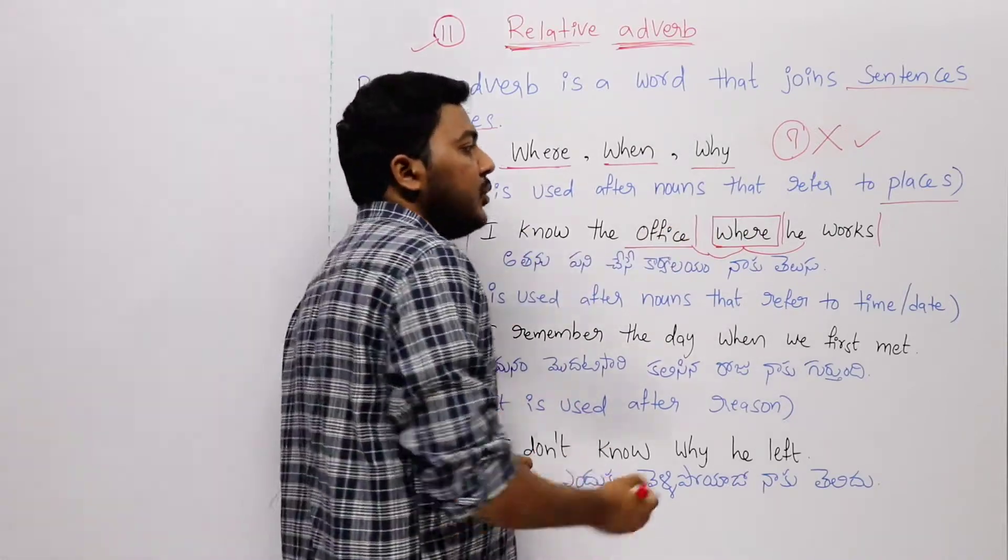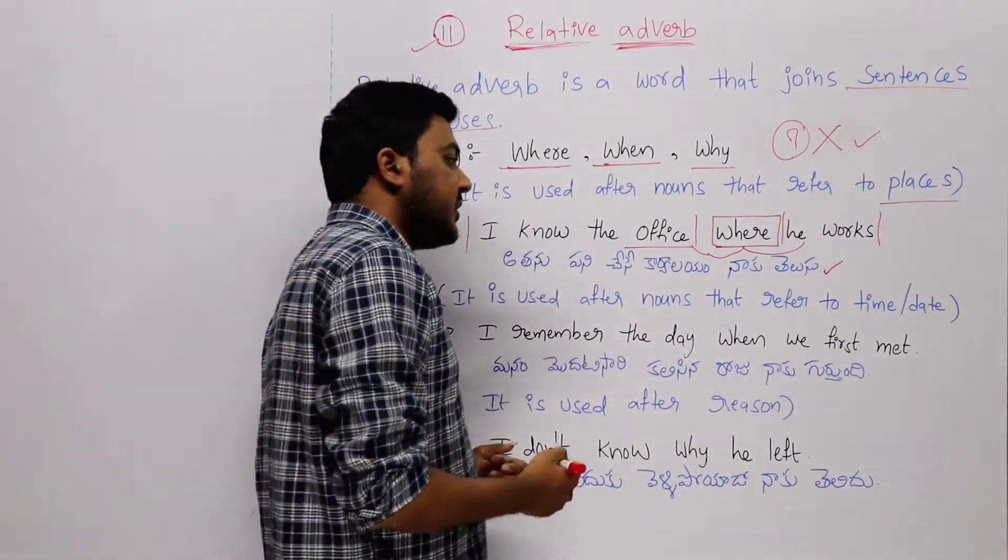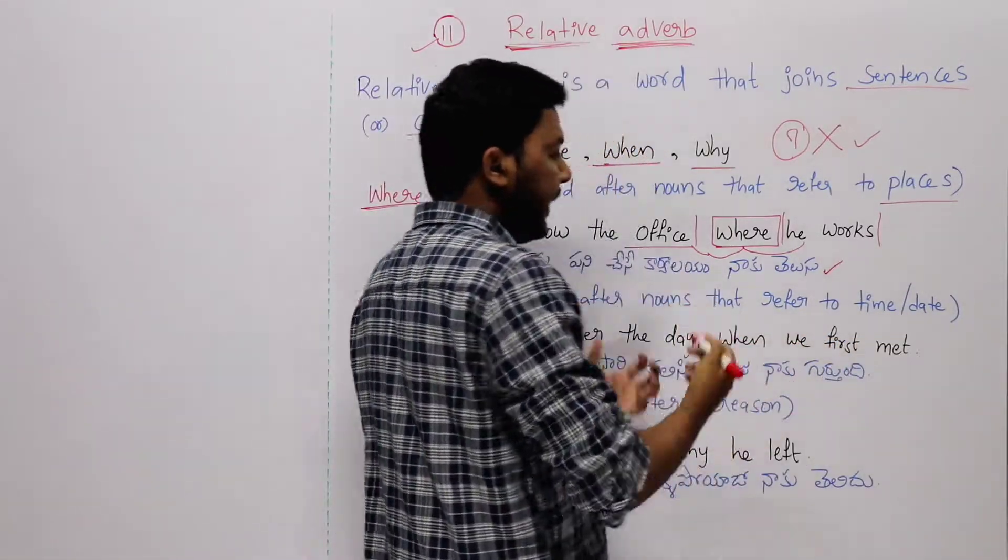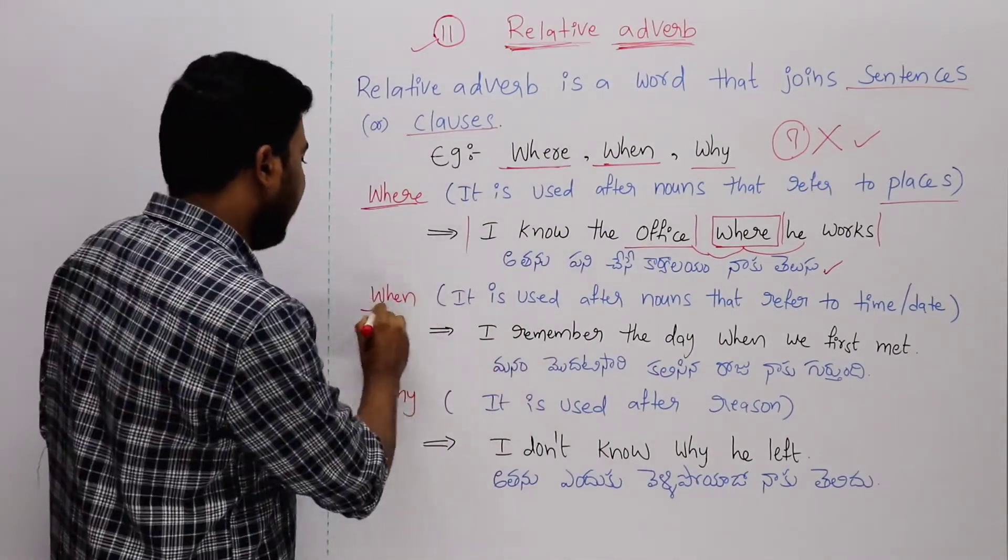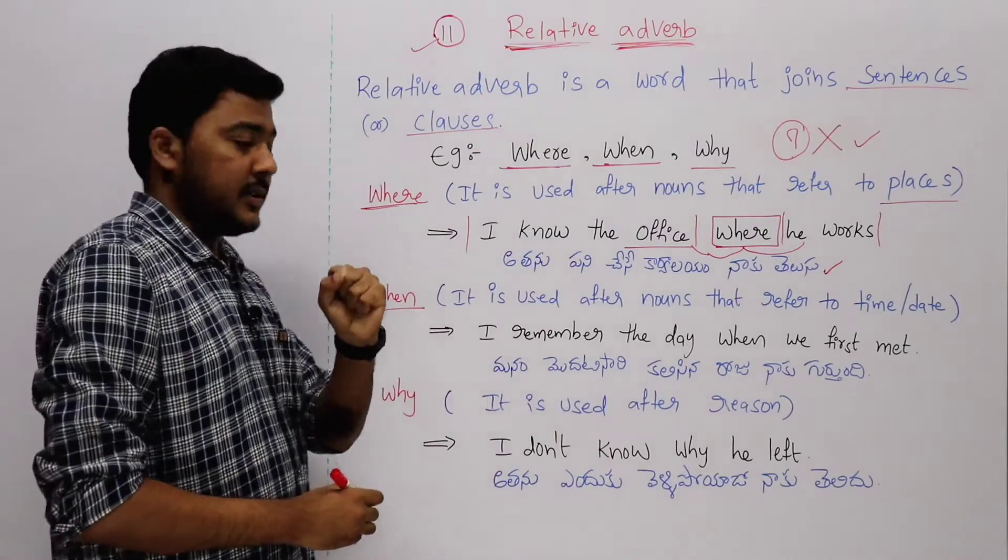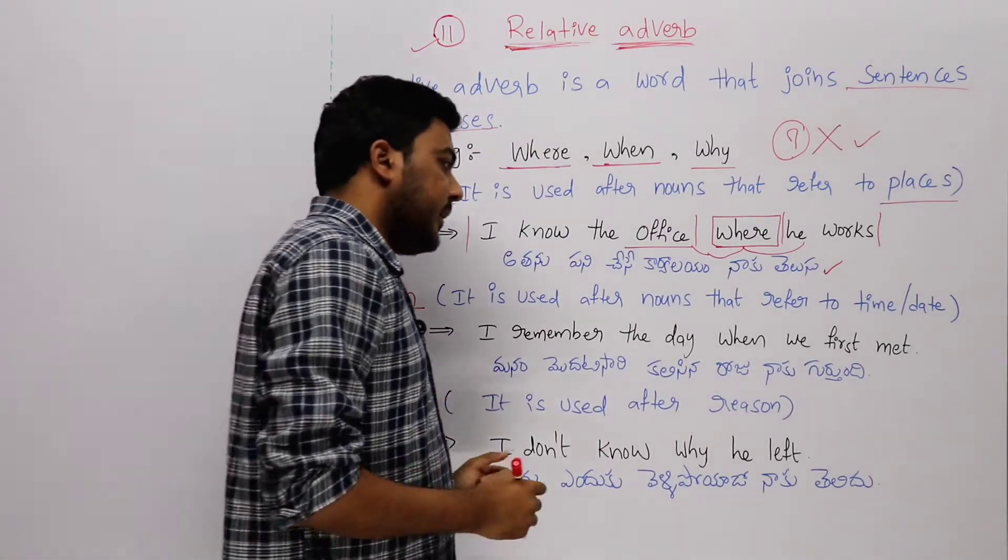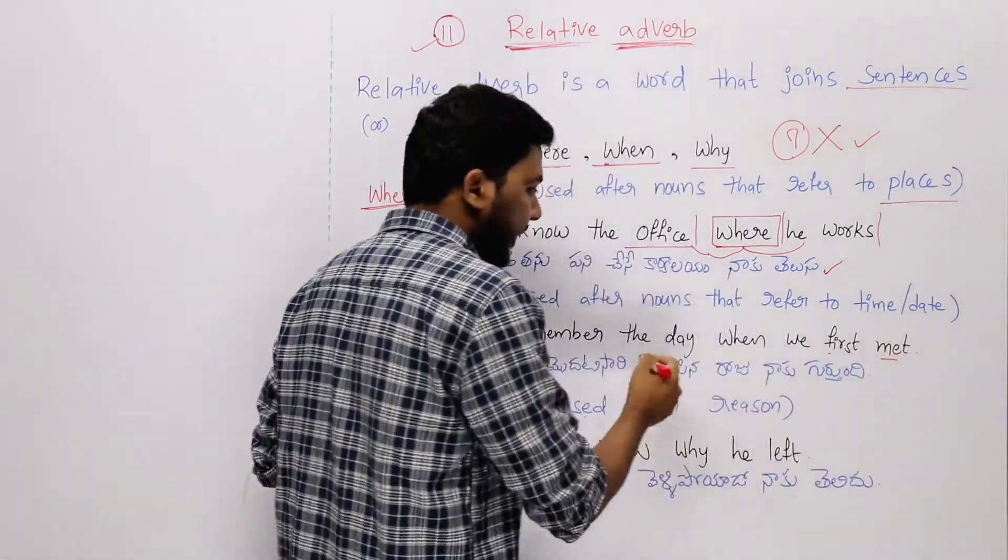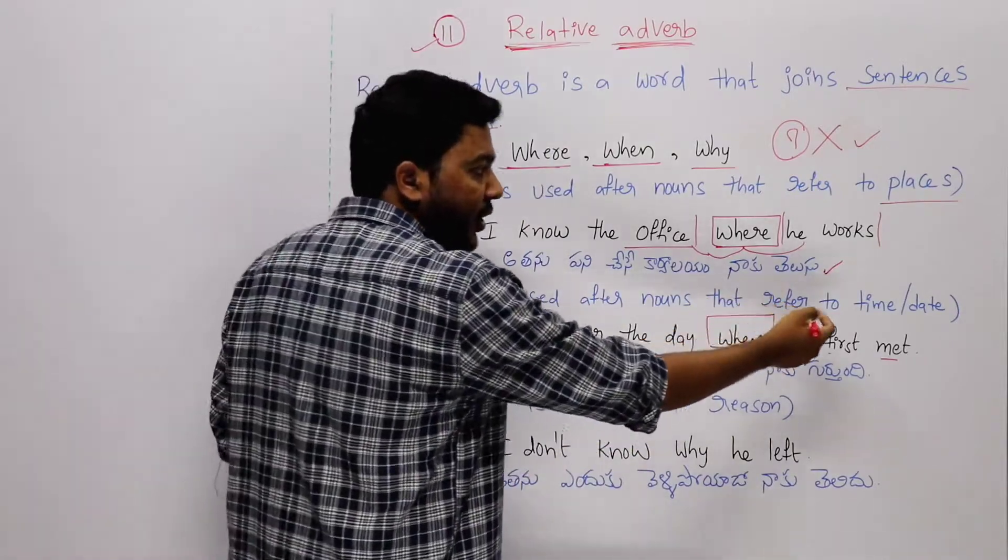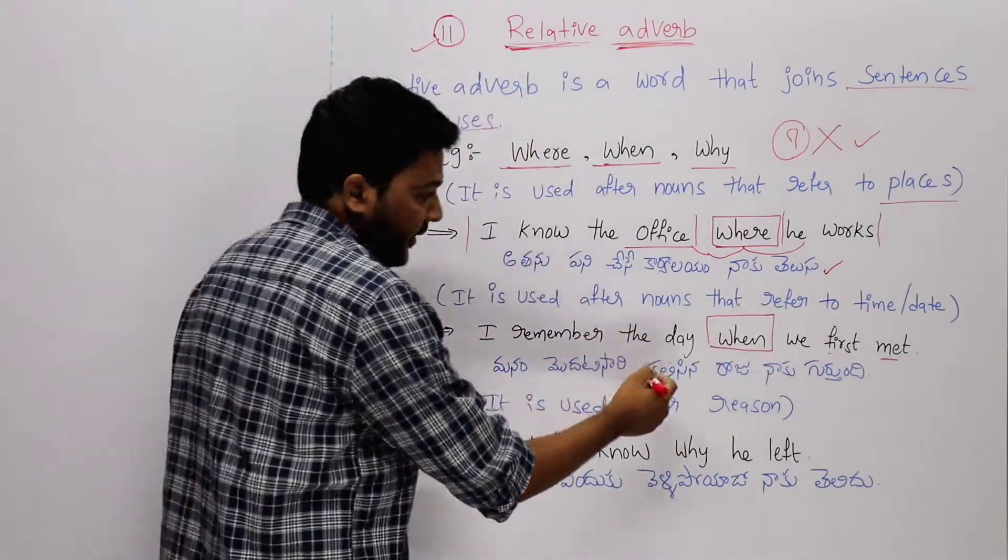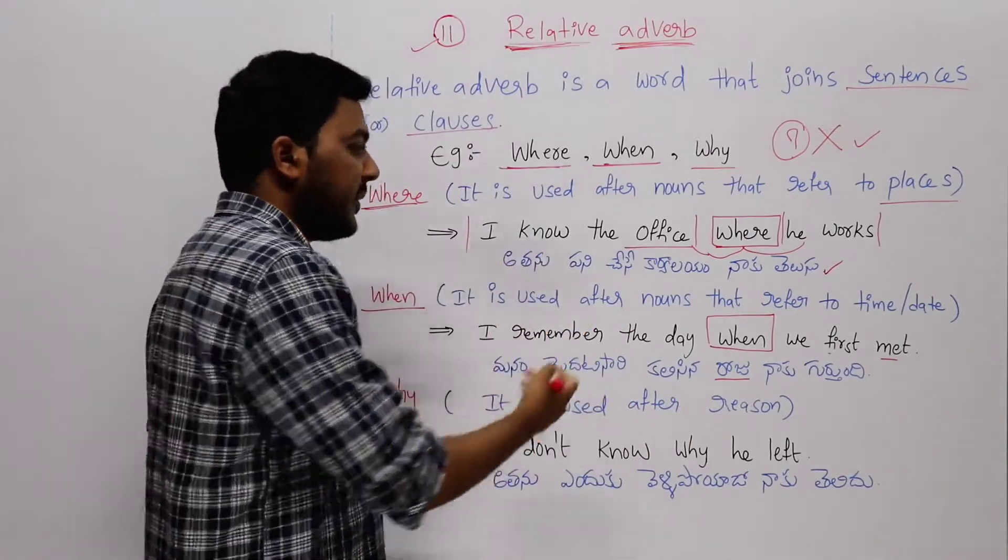Next one: when. It is used after nouns that refer to time or date or day. After nouns related to time or date, we use the relative adverb 'when'. Example sentence: I remember the day when we first met. Here, when is used for time or date - here it's day.